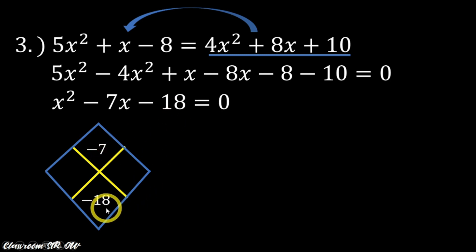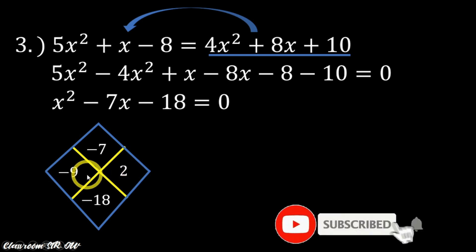So let us now look for two factors that the product is -18 and when we add them, it's -7. Of course, that is -9 and 2. Sir, can we interchange 2 and -9? Of course, we can. But we cannot interchange the sign. If it is already -9, it should be -9. If it is positive 2, it should be positive 2. But you can interchange them in their places or in their positions right now.